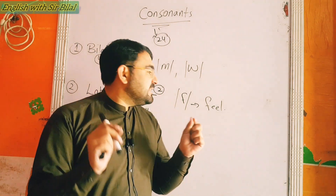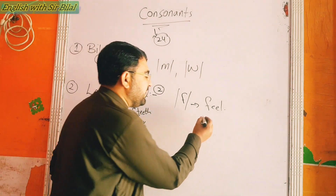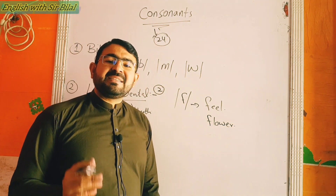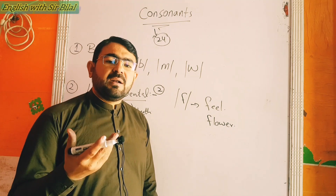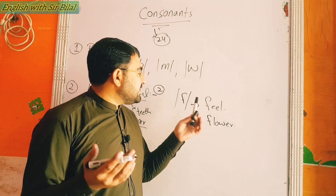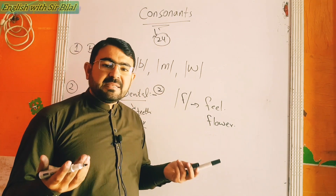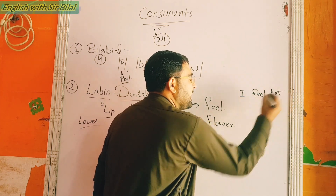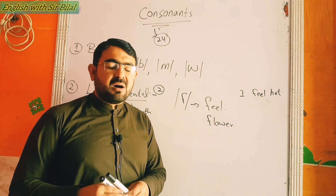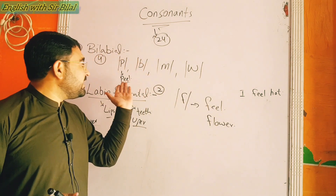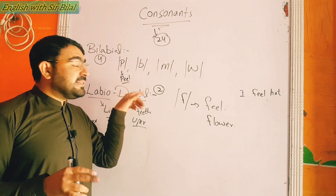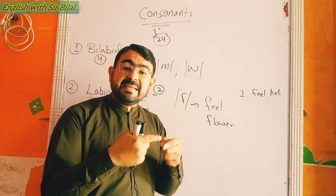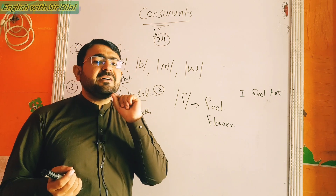The /f/ sound is a labio-dental sound. Another example: 'flower.' Sometimes we mispronounce and say 'plower.' The meaning changes. Similarly, instead of 'feel' if you say 'peel,' the meaning is different — 'I feel hot' versus 'I peel hot' is wrong. 'Peel' has a different meaning, so take care of pronunciation and pronounce correctly.